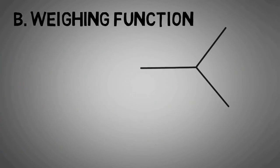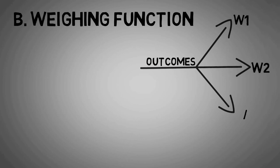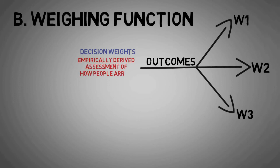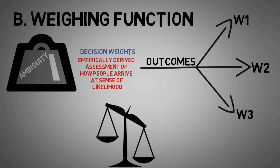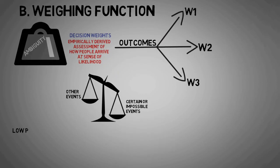Weighing function - each outcome is given decision weights. They are not similar to probabilities assigned as they do not follow a rational choice. Decision weights are empirically derived assessment of how people arrive at sense of likelihood. They can be affected by factors like ambiguity. Events which are certain or impossible receive higher rates than other events. Thus editing phase comes into play. Low probabilities are overrated while high and medium probabilities are subjectively underrated.